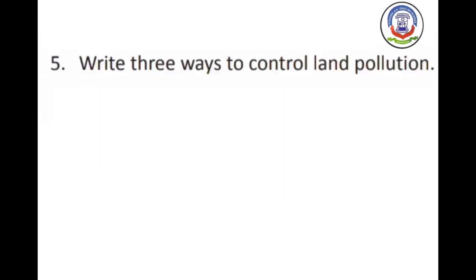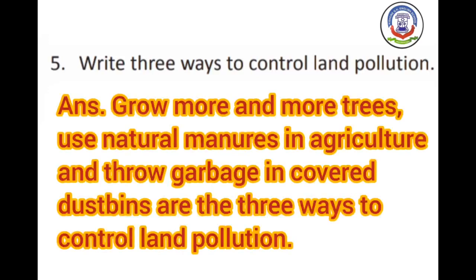Question 5 — write 3 ways to control land pollution. The answer is: 1) grow more and more trees, 2) use natural manures in agriculture instead of chemical fertilizers — for example, cow dung, 3) throw garbage in covered dustbins instead of littering, so that land pollution does not occur.